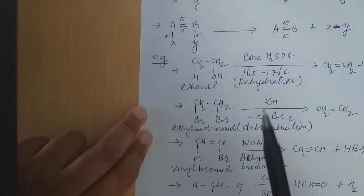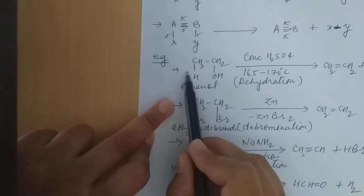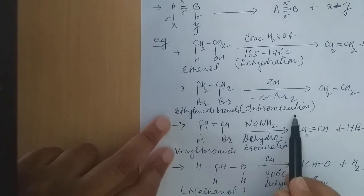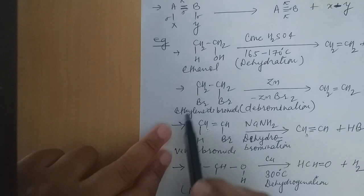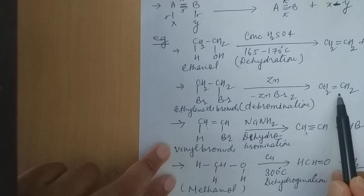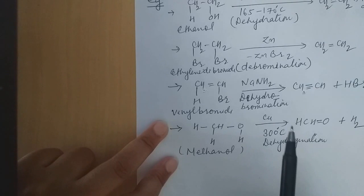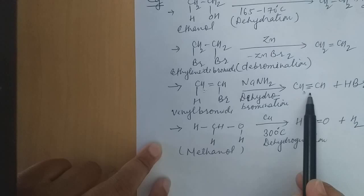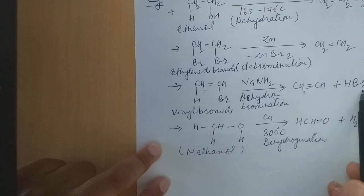Some examples we will discuss. Like ethanol — we use dehydration, that means removal of a water molecule. This water molecule will be removed from ethanol under temperature conditions, and ethene is formed — the pi bond formation. For debromination — that means removal of bromine — the Br2 molecule is removed. For dehydrohalogenation, HBr gets eliminated and there is an alkyne formation. HBr is eliminated in this reaction.